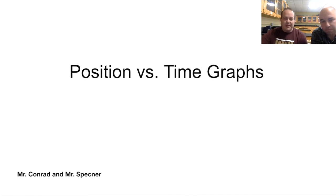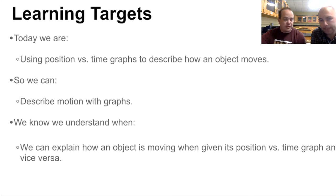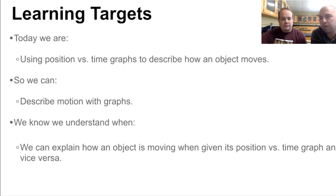We've dealt with these a little bit before. You may have seen these in math class as far as using the coordinate plane to graph something, so this should be somewhat familiar. So today we are going to use position versus time graphs to describe how an object moves so that you can describe motion with graphs — you can tell if it's going faster, slower, or if it's staying still. Besides just a regular motion map, which we've done already, we're now going to take that same information and put it into a graph.